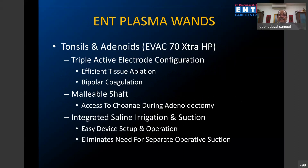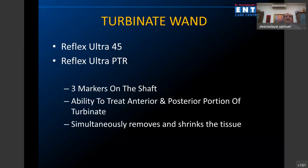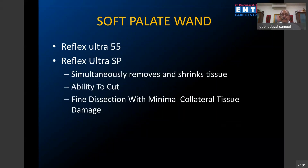There are different wands available. The commonest one is called the Ibex 70 — considered the workhorse. It has a triple active electrode, a shaft that you can bend, can be used in adenoidectomy, and has complete integrated saline and irrigation. There are also turbinate wands: Reflex Ultra 45 and Reflex Ultra PTR, which I will show in videos demonstrating how they are used.